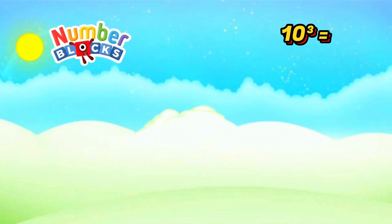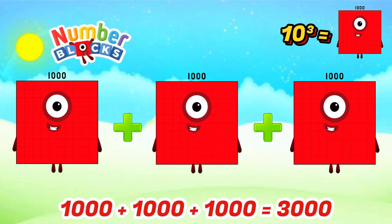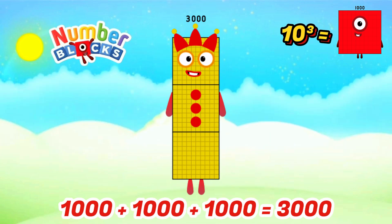Cube of 10 is 1,000. When we add 1,000 three times, the answer is 3,000. Amazing!